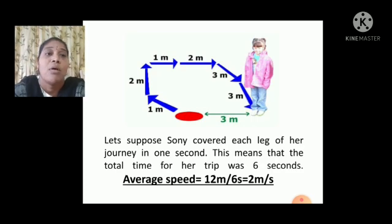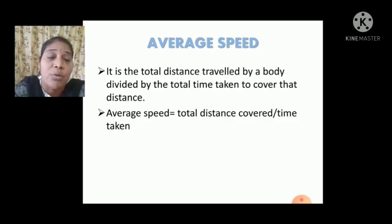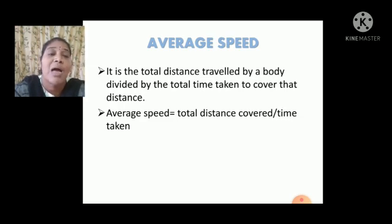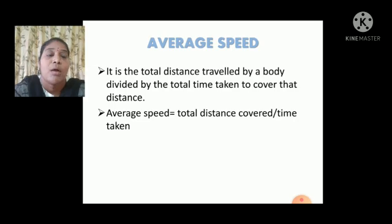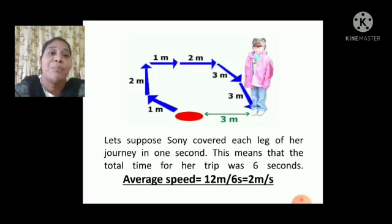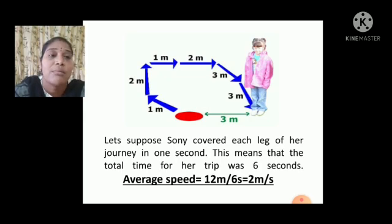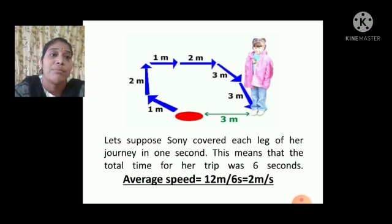Now, looking at the definition: average speed is the total distance traveled by a body divided by the total time taken. The formula for average speed equals total distance divided by time taken. Here, total distance is 12 meters and time taken is 6 seconds. 12 divided by 6 equals 2 meters per second. That is the average speed of that girl.